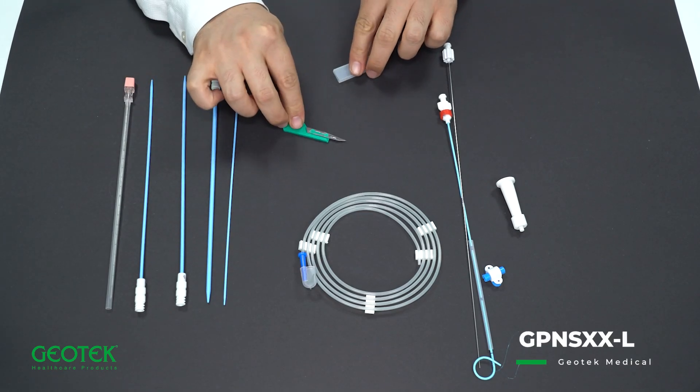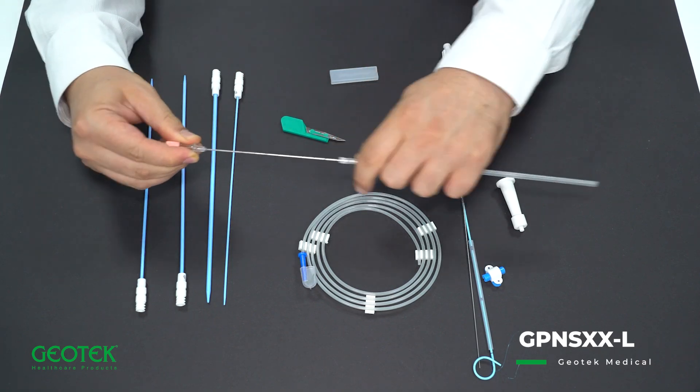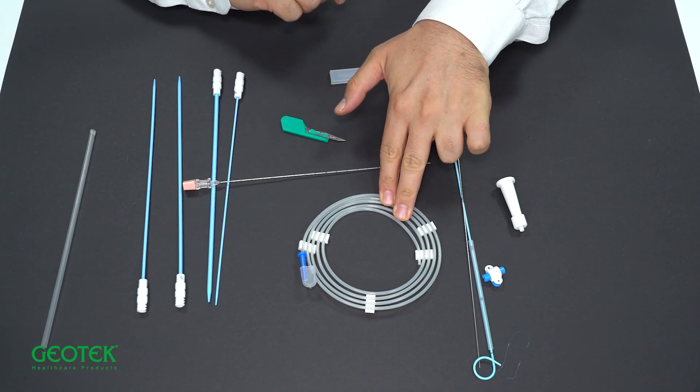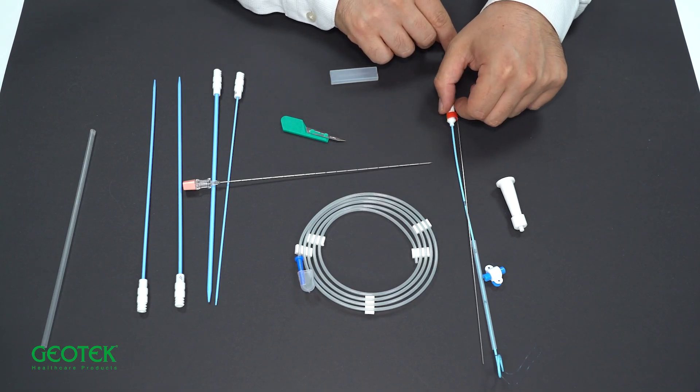Our percutaneous nephrostomy set with dilatator includes a sterile scalpel, a Shiba entry needle, dilatators, guide wire, and nephrostomy with obturator.